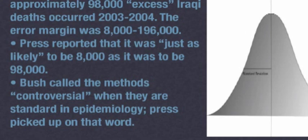Bush called the methods controversial, and I would say they are fairly standard methods in epidemiology. There are some reasons to believe the methods were controversial — in particular, the authors of the study were very overtly anti-war, which did not help in terms of people's suspicion about their methods. And if you look at their methods carefully there are some issues, but the idea that it was controversial in a superficial way, which I think is what Bush was saying, was really not a fair assessment from a scientific point of view.